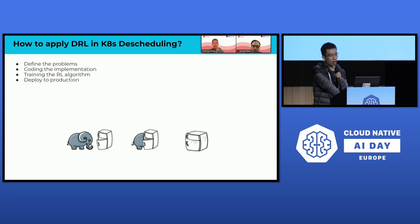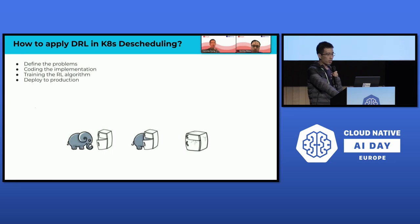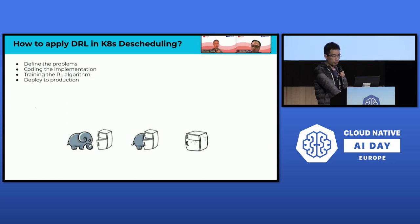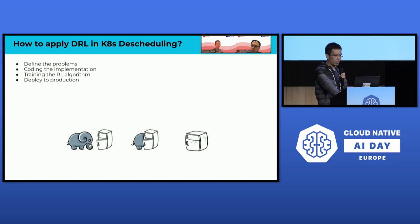Now that we have decided our approach, let's discuss how to implement reinforcement learning in Kubernetes descheduling. The process may seem straightforward — only four steps: define the problem, implement the reinforcement learning algorithm, train the agent, and deploy to production. However, there's a catch: we found there is no existing work applying reinforcement learning specifically to Kubernetes descheduling. While there are many studies on using reinforcement learning in general scheduling problems, none are directly applicable to Kubernetes descheduling in particular. Thus, we had to develop our solutions from scratch without relying on previous work.